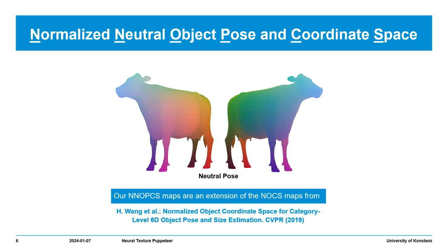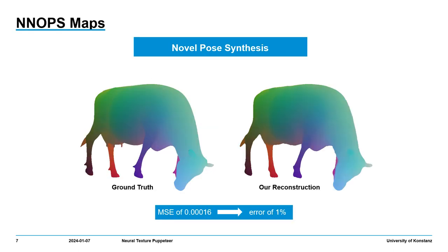We define a neutral pose where the color at each point uniquely describes that point. Note that our NNO-PCS maps can be viewed as an extension of the NO-PCS maps published at CVPR 2019. We achieve accurate results for novel pose synthesis, as you can see. This is important to achieve accurate texture reconstructions, as we will see now.